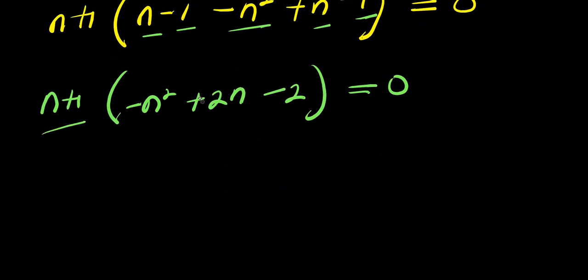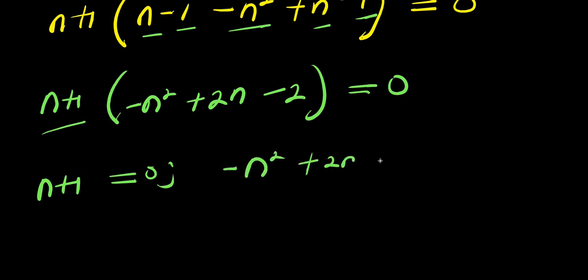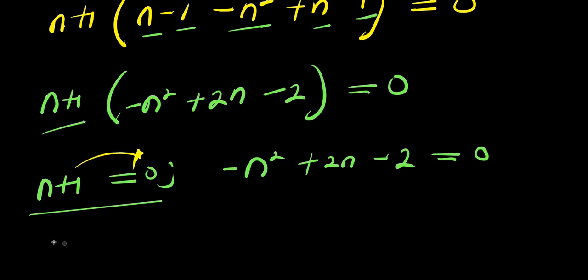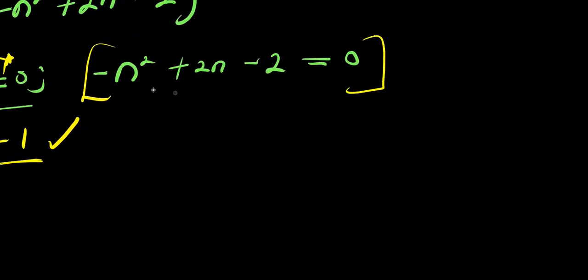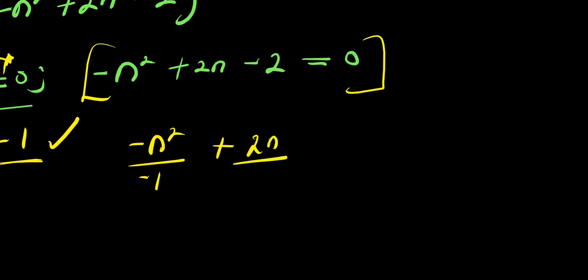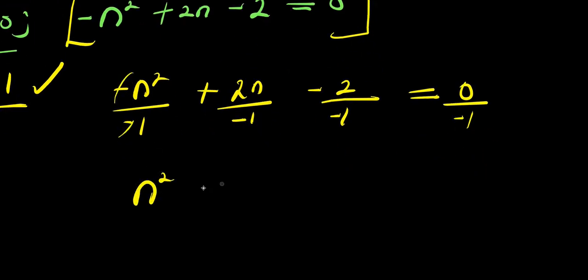Setting each factor equal to zero: if n plus 1 equals 0, then n equals negative 1. The other factor gives minus n squared plus 2n minus 2 equals 0. We divide every term by negative 1 to make the leading coefficient positive, giving n squared minus 2n plus 2 equals 0.